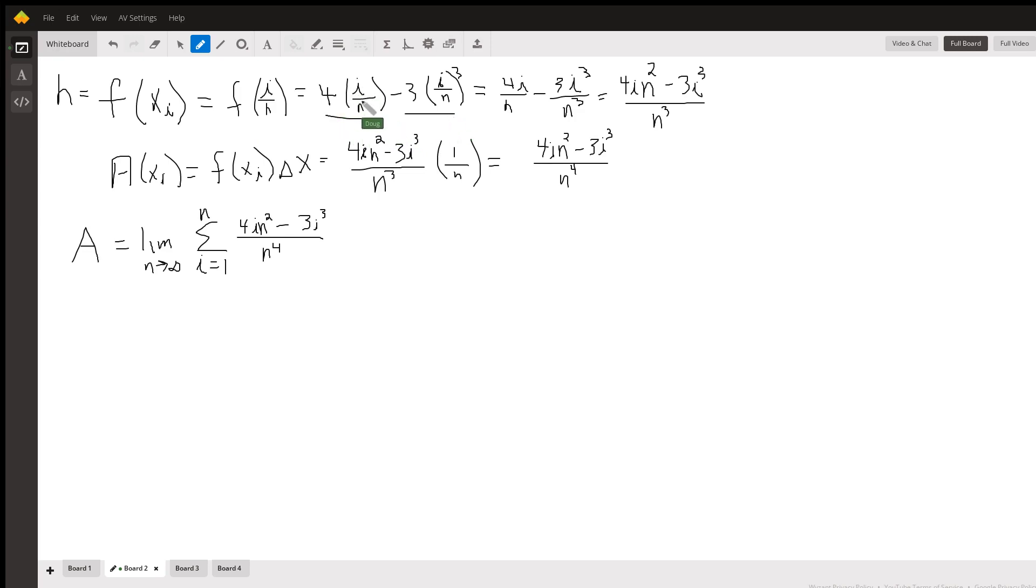4 times i over n minus 3 times i over n, the quantity cubed. If you simplify that, you get this. Now the area of the i-th rectangle, we have to multiply f of x_i by its width. Here is the height represented in terms of i and n, and here we multiply by a width. So this is a formula right here for the area of the i-th rectangle.